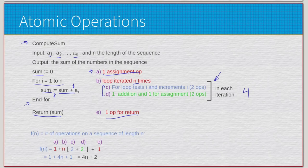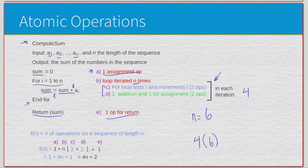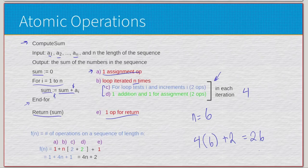For example, with n=6: 4 times 6 plus 2 equals 26 atomic operations. This isn't too bad, but once we add nested loops, the number of operations grows very quickly if we're not careful.